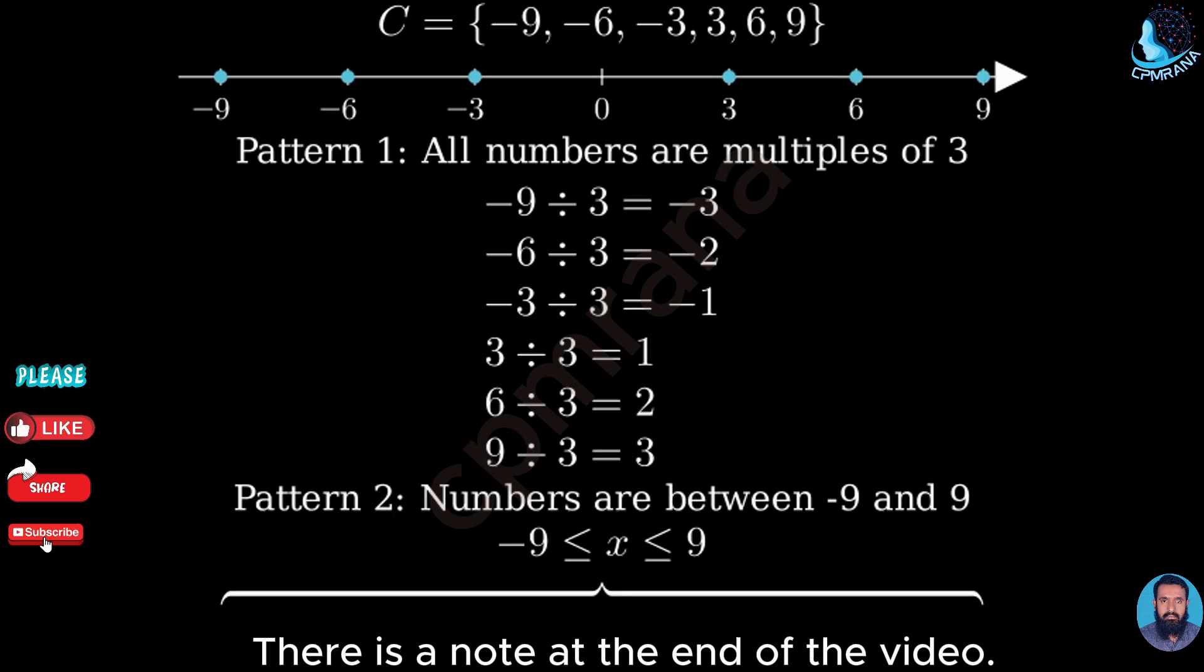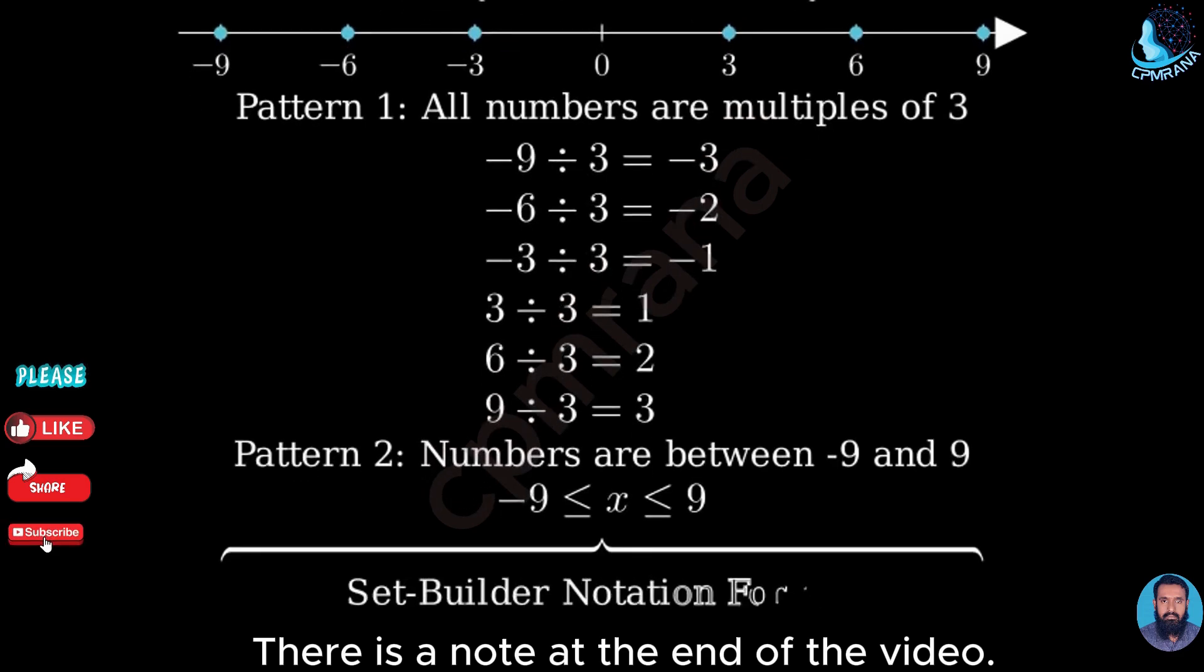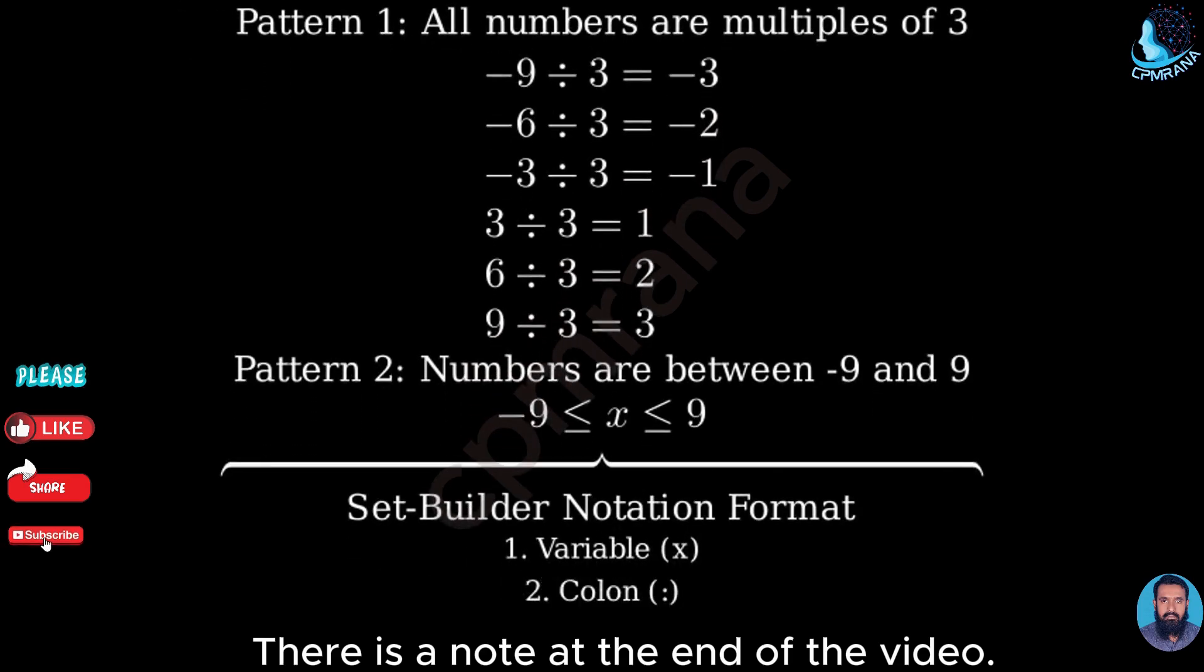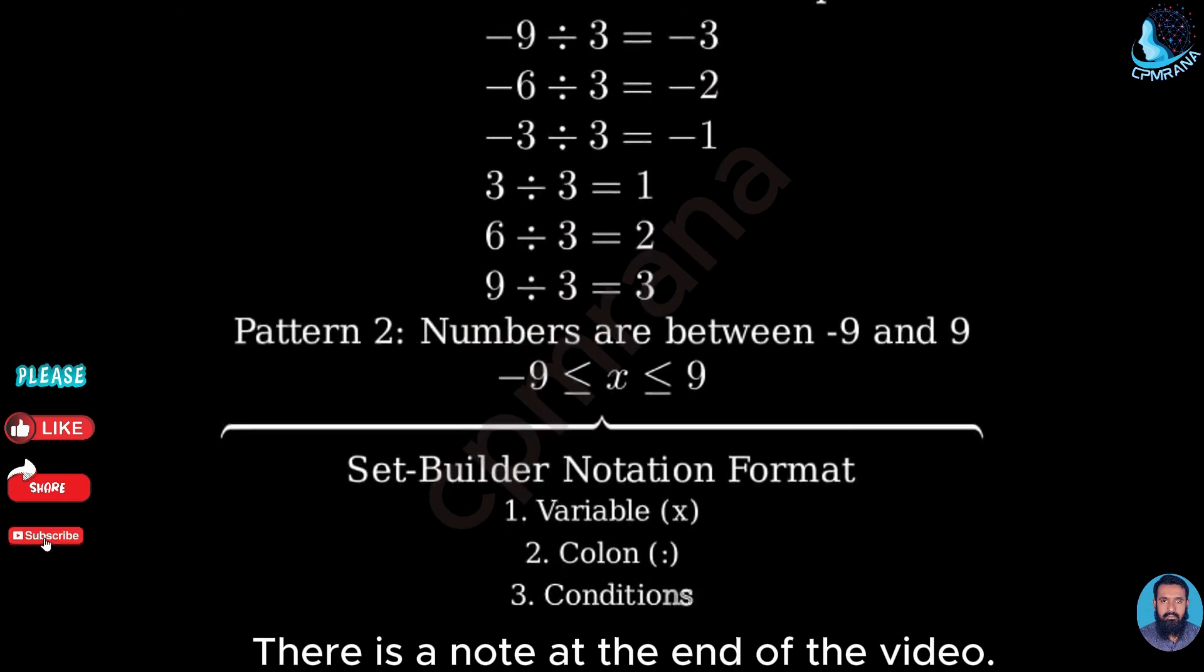Now we can write this set in set-builder notation. Set-builder notation has three parts: the variable, a colon which means such that, and the conditions that the variable must satisfy.